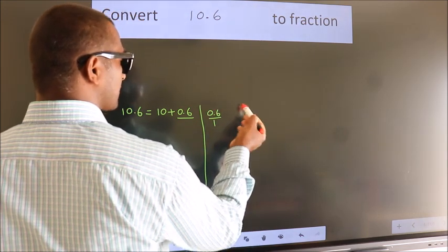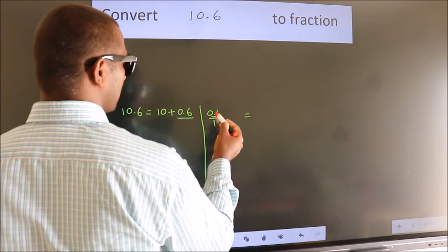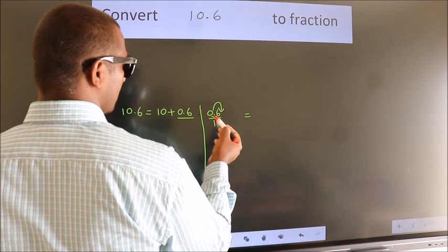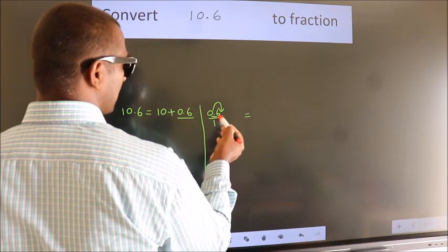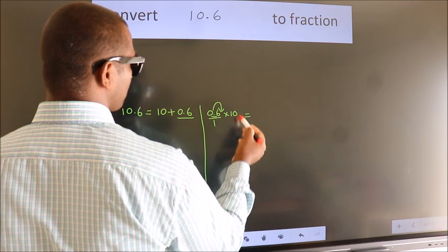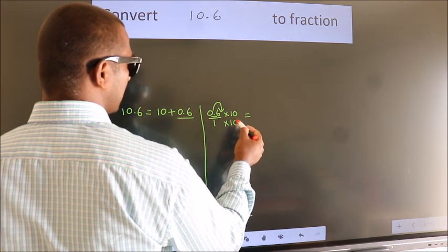To convert to fraction, we have to move this decimal after one number. To move this decimal after one number, multiply it with 10. Whatever you are multiplying in the numerator, in the denominator also do the same.